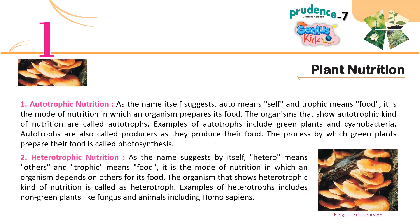Autotrophic Nutrition: As the name itself suggests, 'auto' means self and 'trophic' means food. It is the mode of nutrition in which an organism prepares its own food. Organisms that show autotrophic nutrition are called autotrophs; examples include green plants and cyanobacteria. Autotrophs are also called producers. The process by which green plants prepare their food is called photosynthesis. Heterotrophic Nutrition: 'Hetero' means others and 'trophic' means food. It is the mode of nutrition in which an organism depends on others for its food. The organism is called a heterotroph; examples include non-green plants like fungi and animals including Homo sapiens.